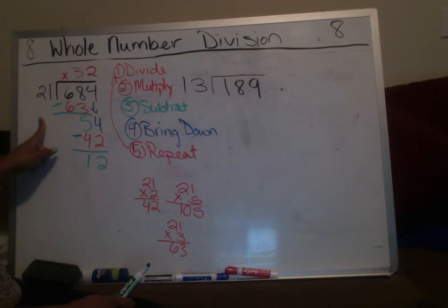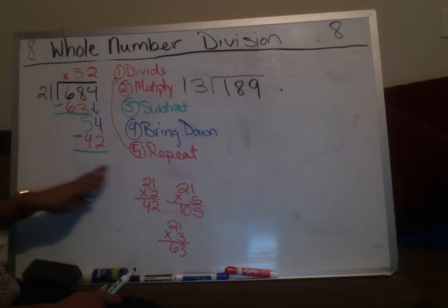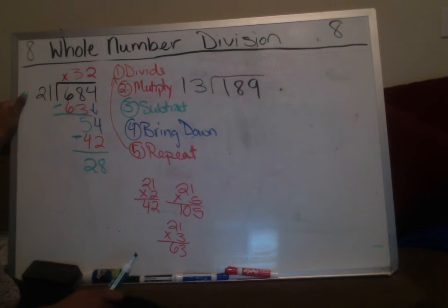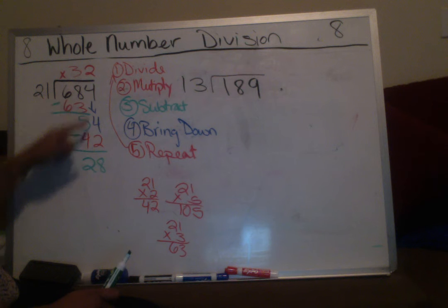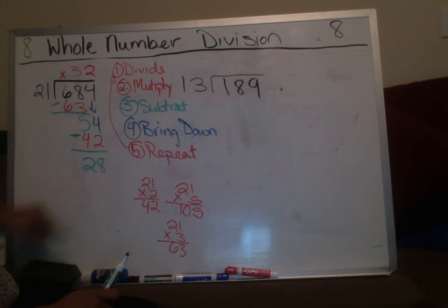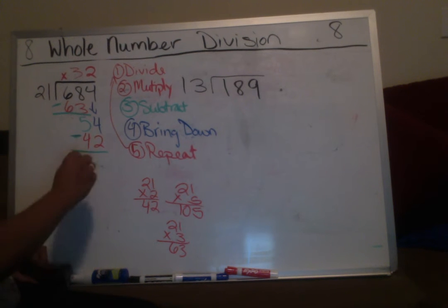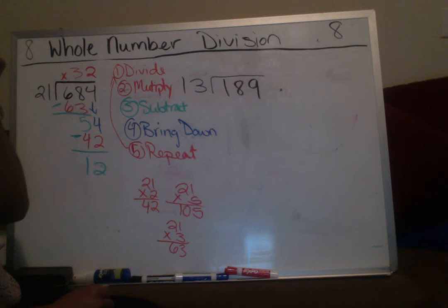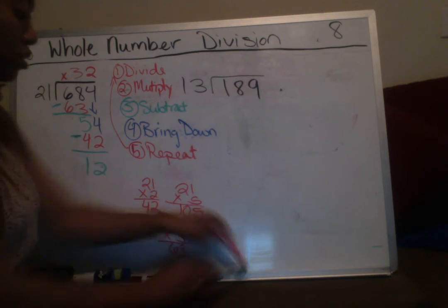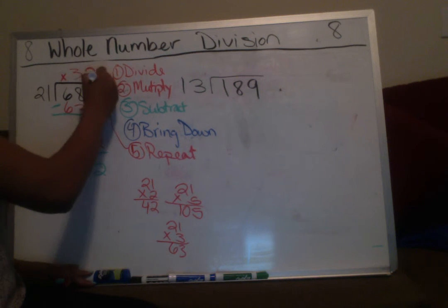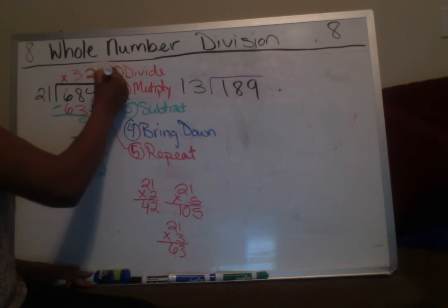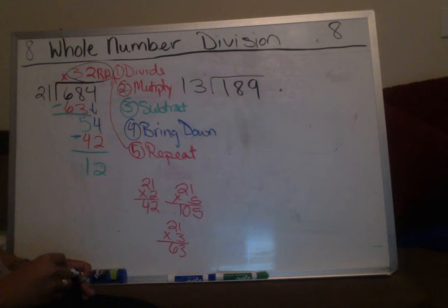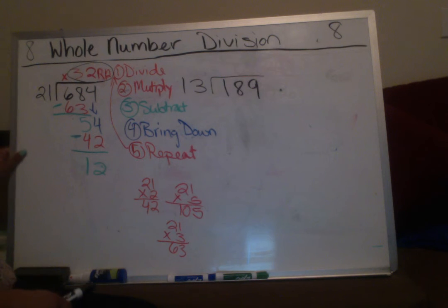Sometimes people worry about getting a remainder of 12. Here's the rule: if your remainder is ever greater than your divisor, you are wrong. For example, if we got a remainder of 28, that would be wrong because the divisor should always be larger than the remainder. Our remainder is 12, so that works. We'll do our checking method — you can always check your work.